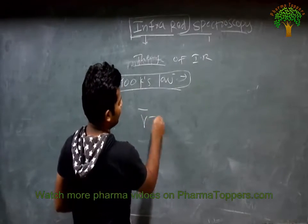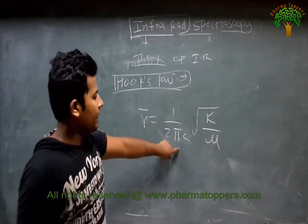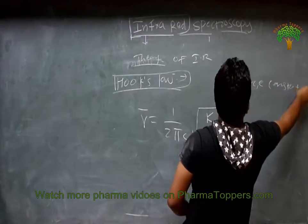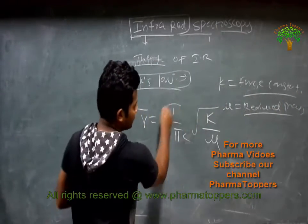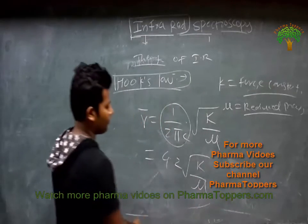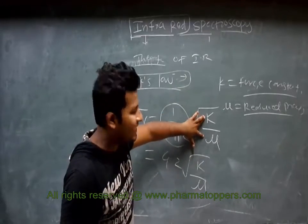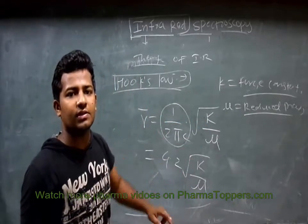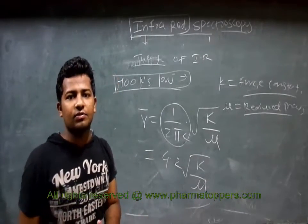So what does Hooke's Law say? The equation is: V̄ = (1/2πc) × √(K/μ), where c is the velocity of light, K is the force constant, and μ is the reduced mass. This equation is the key to differentiating various functional groups in IR spectroscopy, because different functional groups have different values of K and μ.